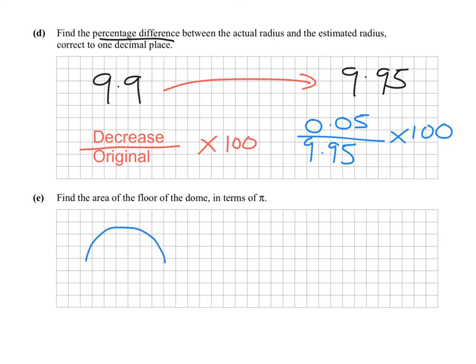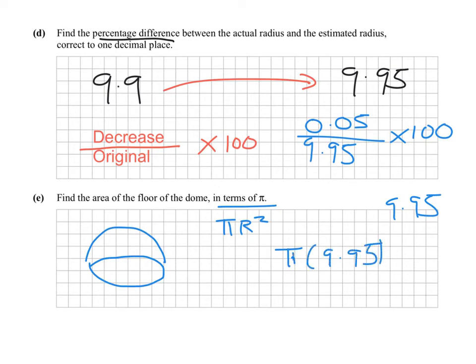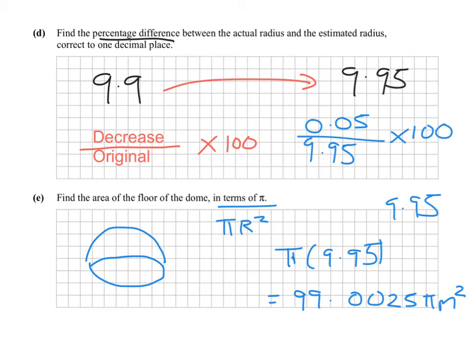Find the area of the floor of the dome. The floor of a hemisphere is in the shape of a circle, so you're finding the area of a circle: πr². It says 'in terms of π,' which means you leave π in your answer. The radius is 9.95, so it's π × 9.95² = 99.0025π meters squared. A common mistake was finding the circumference instead of the area.